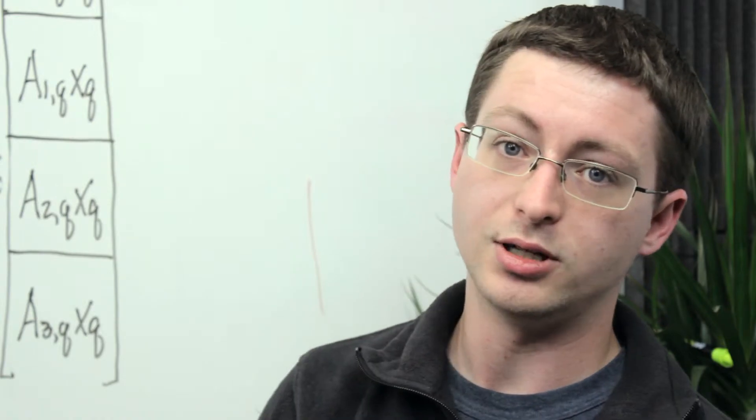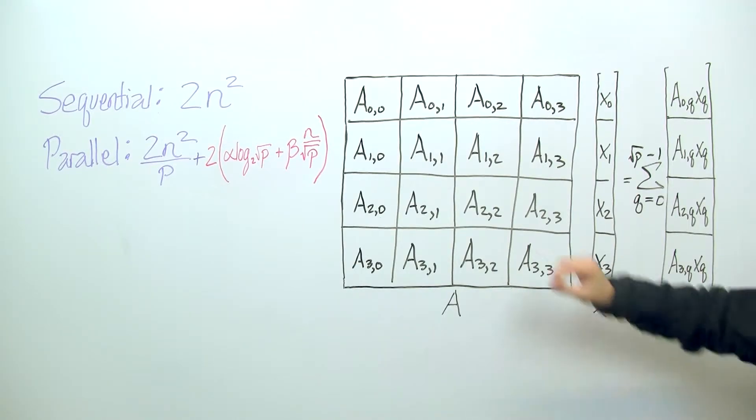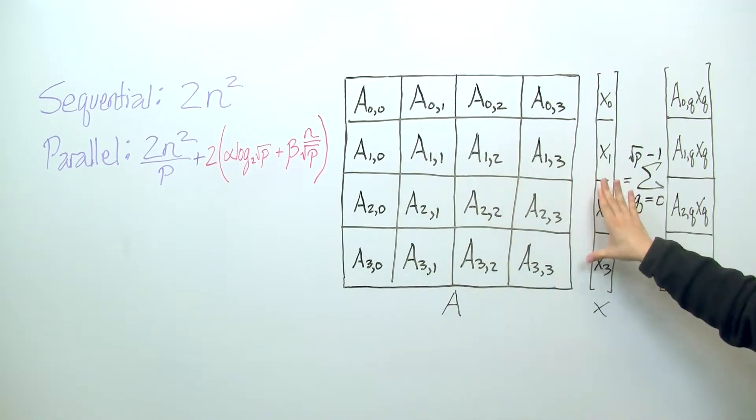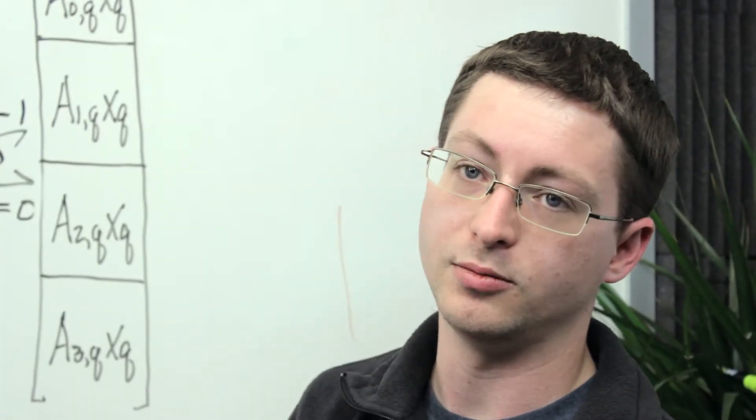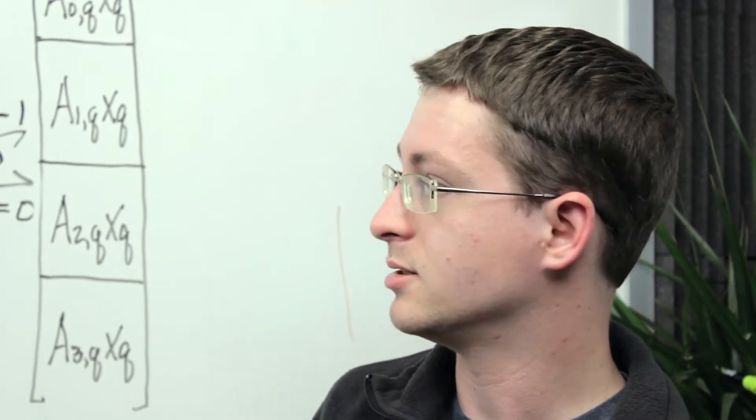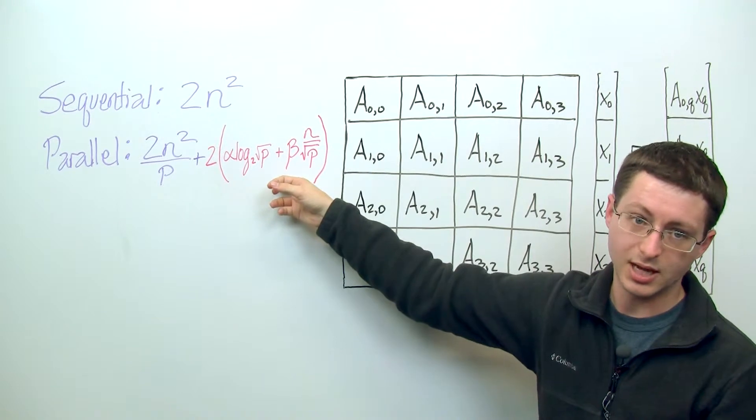So it turns out that you can do that with an all-gather within columns of this two-dimensional grid. But really the point is that you're running an all-gather where the final result will be of length n over root p, and you're performing it with root p processes. And so it turns out that the cost of that is the exact same as the reduce-scatter step.